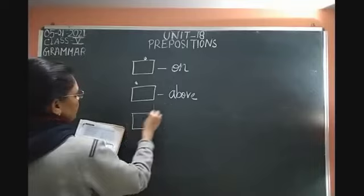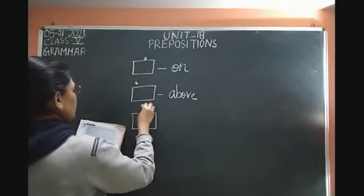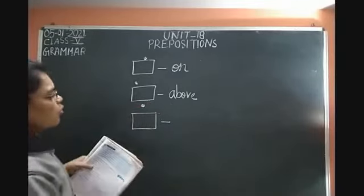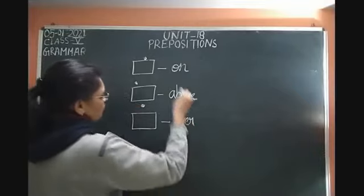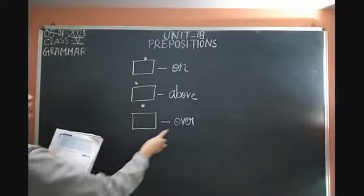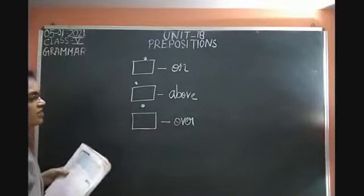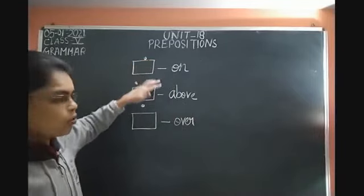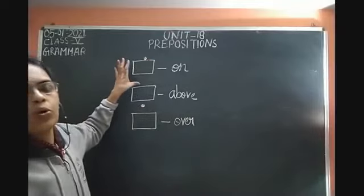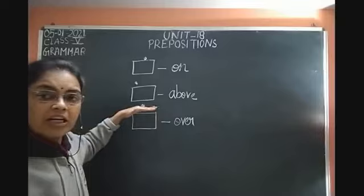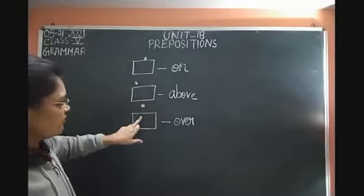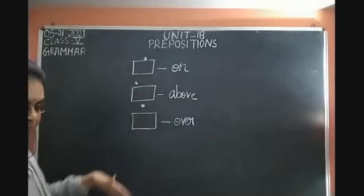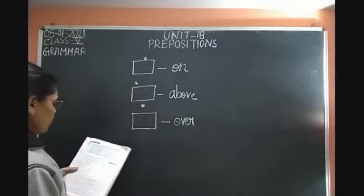For 'over' — when something is vertically above, ekdam vertically box ke oopar koi cheez ho, toh uske liye 'over' use karte hain. So: 'on' means ekdam oopar on the surface, 'above' means slightly oopar, and 'over' means ekdam vertically oopar. You can see the difference by looking at the pictures — on toh ekdam oopar, above mein thoda kam oopar, aur over mein ekdam vertically above hai.